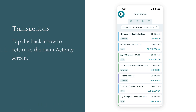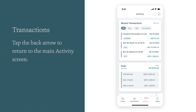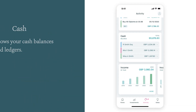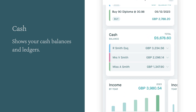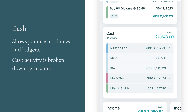Tap back to return to the main activity screen. The cash section shows your cash balances and ledgers such as cash activity on your accounts. Cash activity is broken down by account.